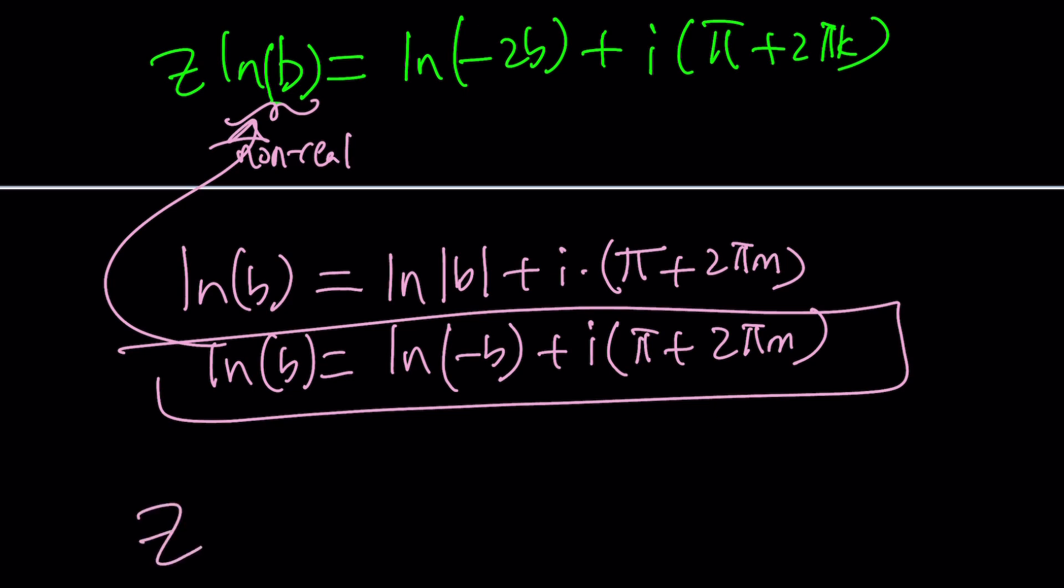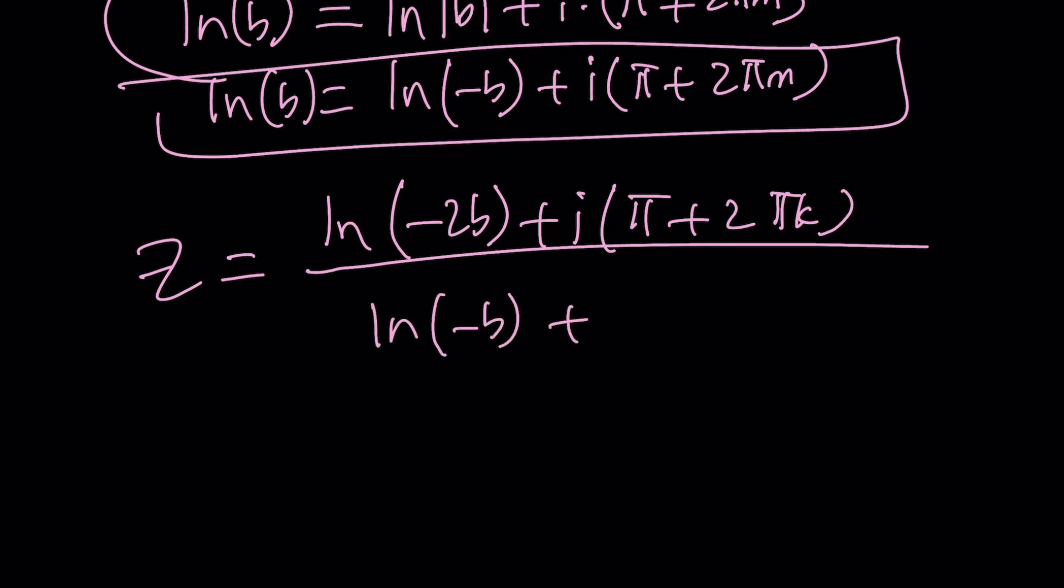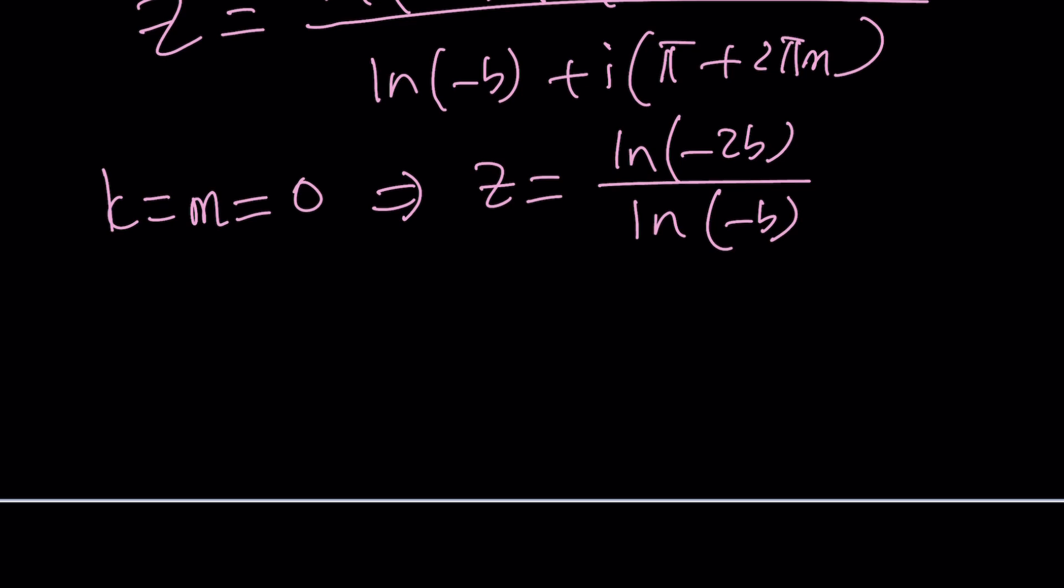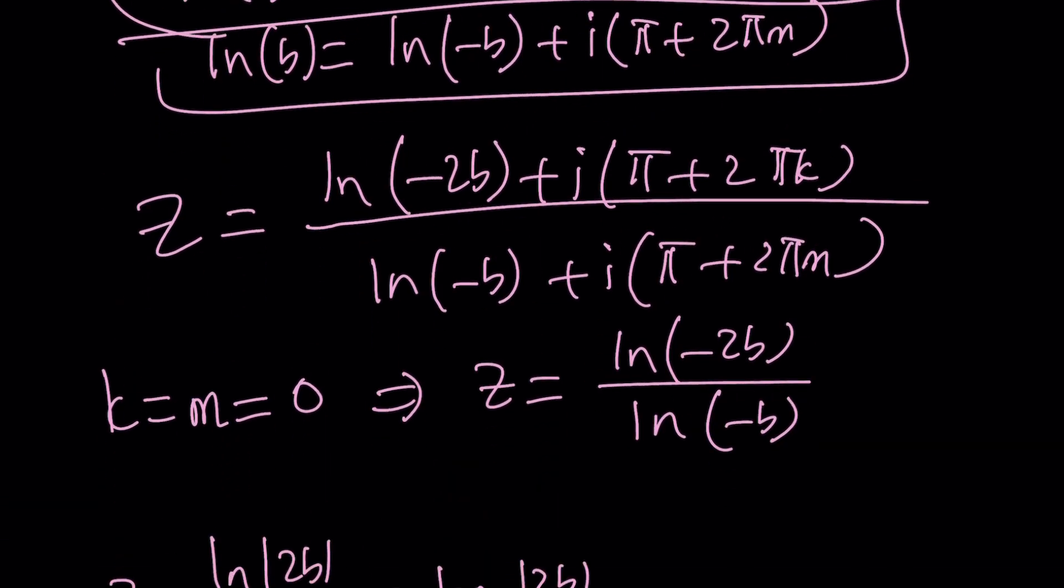And we're going to divide by that. So Z is going to be [ln(-2B) + i(π + 2πK)] divided by [ln(-B) + i(π + 2πM)]. If K and M are both 0, then we're going to get ln(-2B) over ln(-B). In the real scenario, we can actually write the solution as ln |2B| over ln |B|. We could even write this using the change of base. But this is only for the real case. In the general case, things are different. To me, this looks like a good solution.